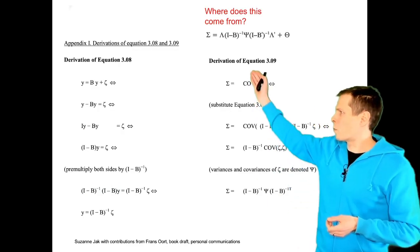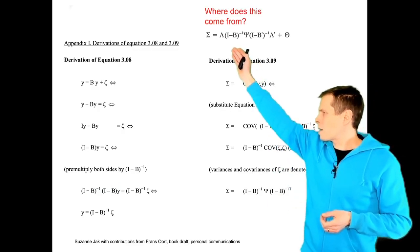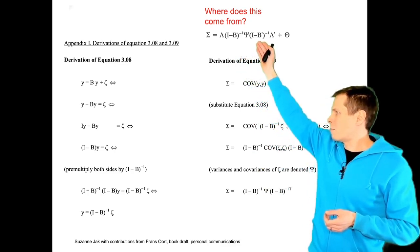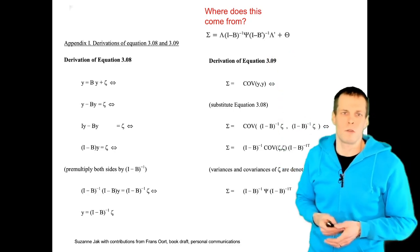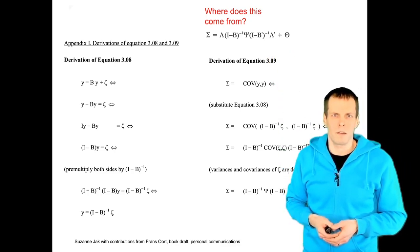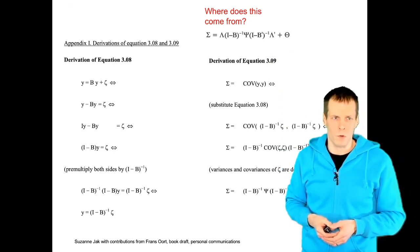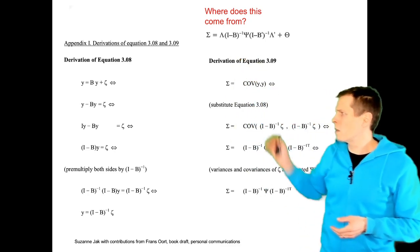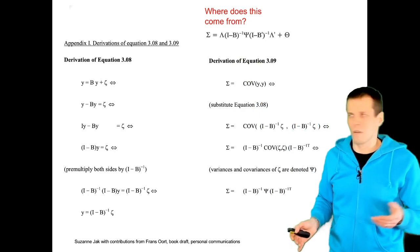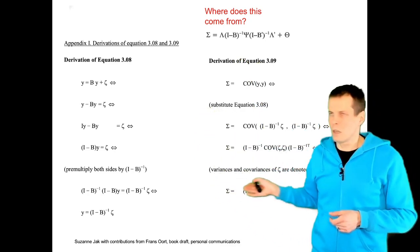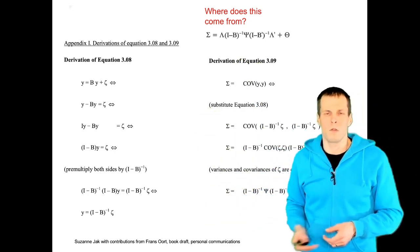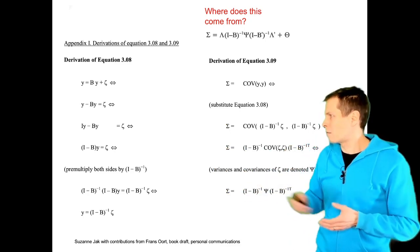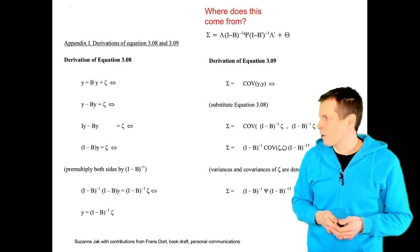Where does this come from — where does the identity matrix minus beta, inverted, times psi, times identity matrix minus beta-prime, inverted — where does that come from? Going through the full derivation may not be very useful, but if you want to understand how it is derived, here is how. That's just the derivation — I got it from Susanne Jack, who is working on a book on SEM, and I really look forward to seeing that book.